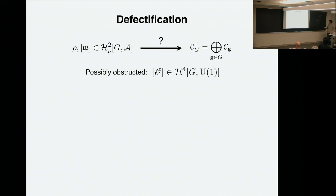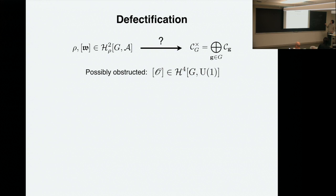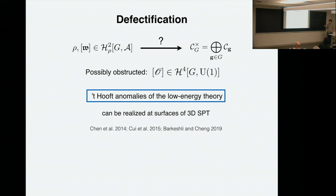You can also braid defects around each other — it's called G-crossed braiding. Together with all the consistency conditions, this gives you the G-crossed braided category. The kind of input you choose is some representation rho, and then also a fractionalization class. You can then solve all the equations to get this whole G-crossed braided category. But this is not always possible — sometimes you have an obstruction. The obstruction is captured by a cohomology class in H^4(G, U(1)), which tells you there's a 't Hooft anomaly in the theory.